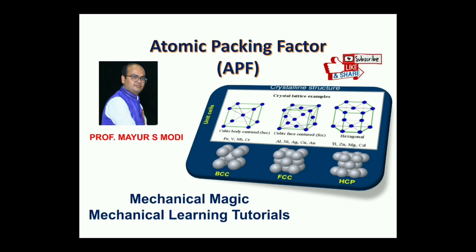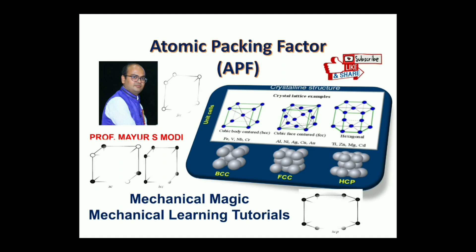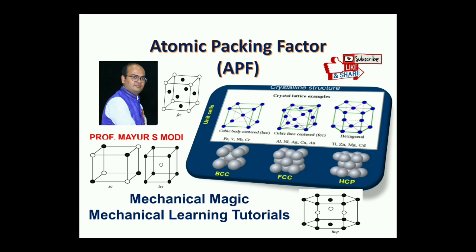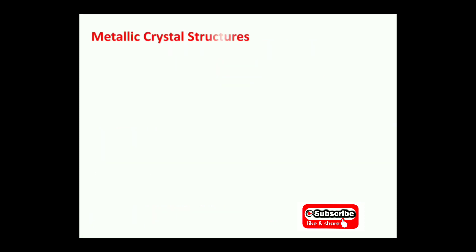Welcome to my YouTube channel Mechanical Magic Mechanical Learning Tutorials. In this video I am talking about the atomic packing factors from the different metallic materials. Metallic materials have four kinds of structures: simple cubic structure, FCC, BCC, and HCP. We will see how the atomic packing factor influences the properties of materials. Let's start with metallic crystal structures.